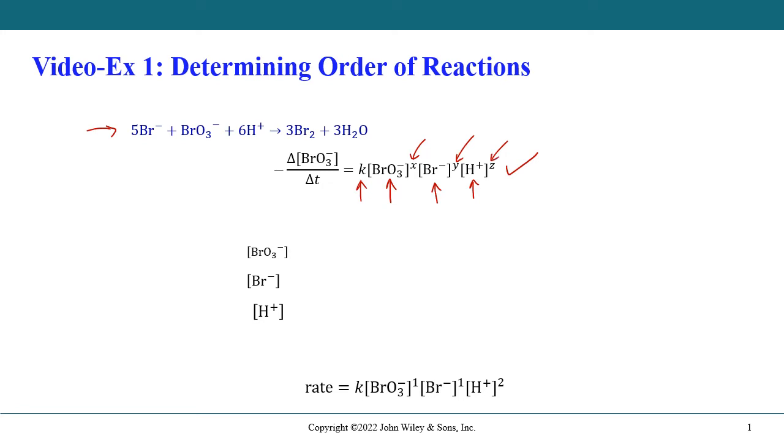Now we do the experiment and we see the following, that we find by experiment that x is equal to 1, y is equal to 1, and z is equal to 2.